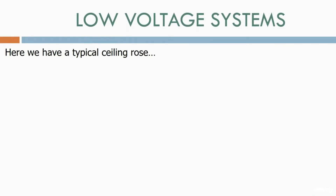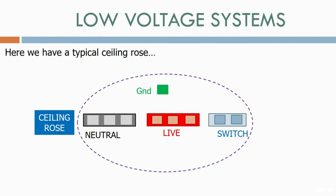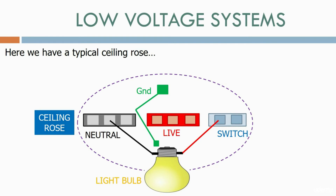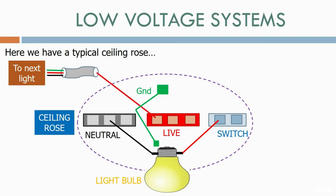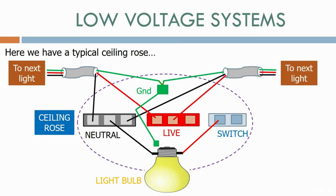Here we have a typical ceiling rose. Inside the ceiling rose we have a neutral terminal strip, a live terminal strip, a switch terminal strip, and a ground terminal strip. The light bulb hangs down from the ceiling rose and is connected to the neutral, ground, and switch terminal strips. To connect the supply to the ceiling rose — as this is a ring, it comes in from two separate directions. From the left-hand cable, we connect the live to the live terminal strip, the neutral to the neutral terminal strip, and the ground to the ground terminal strip. We then connect the right-hand ring, and the ceiling rose is now energised.